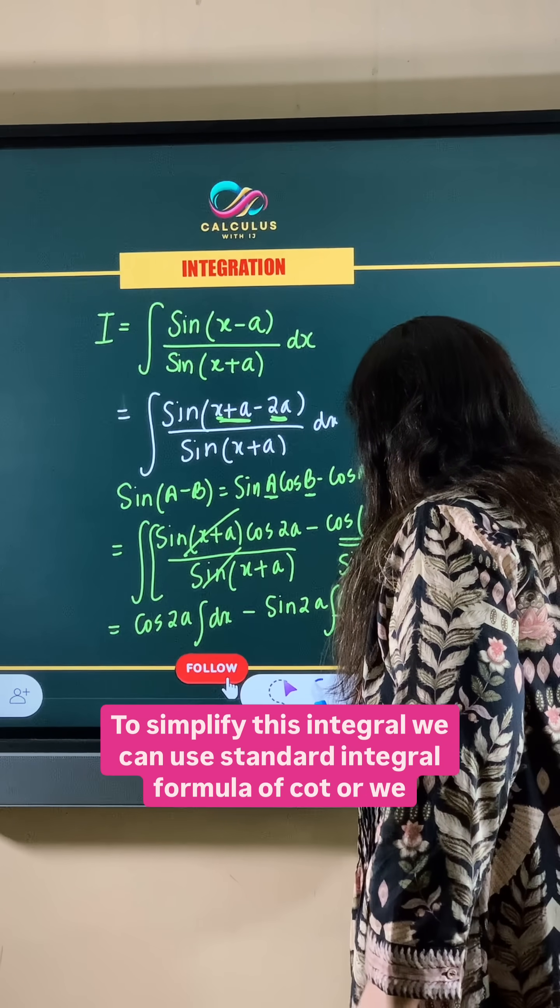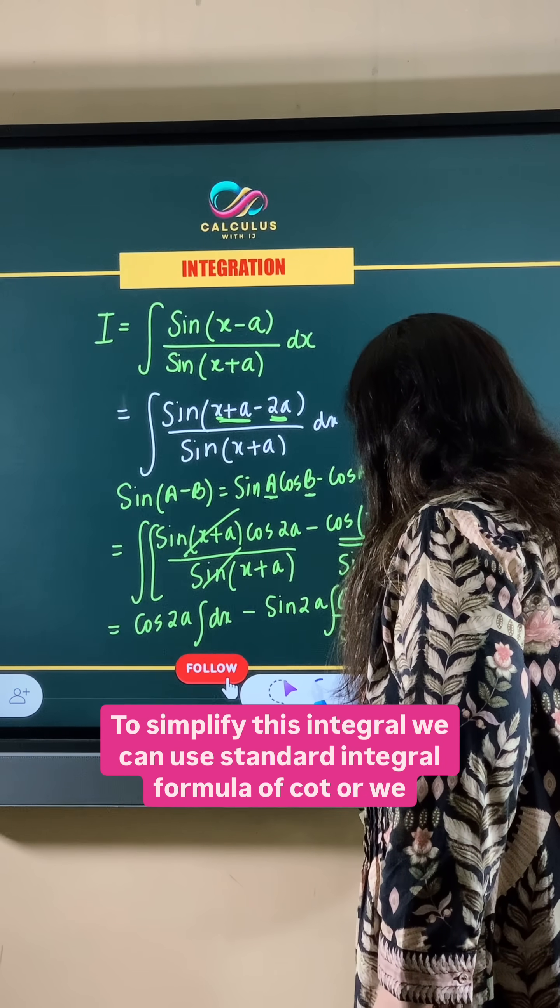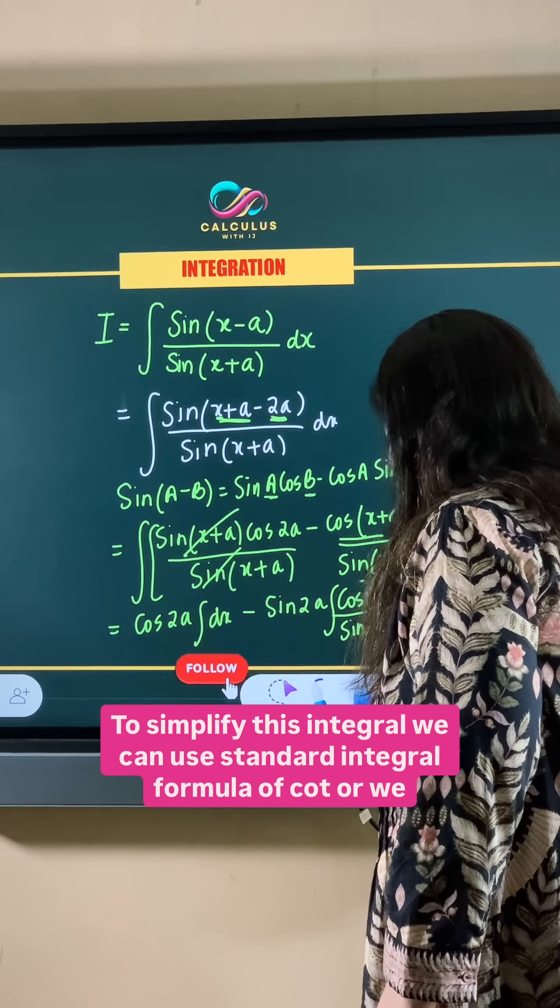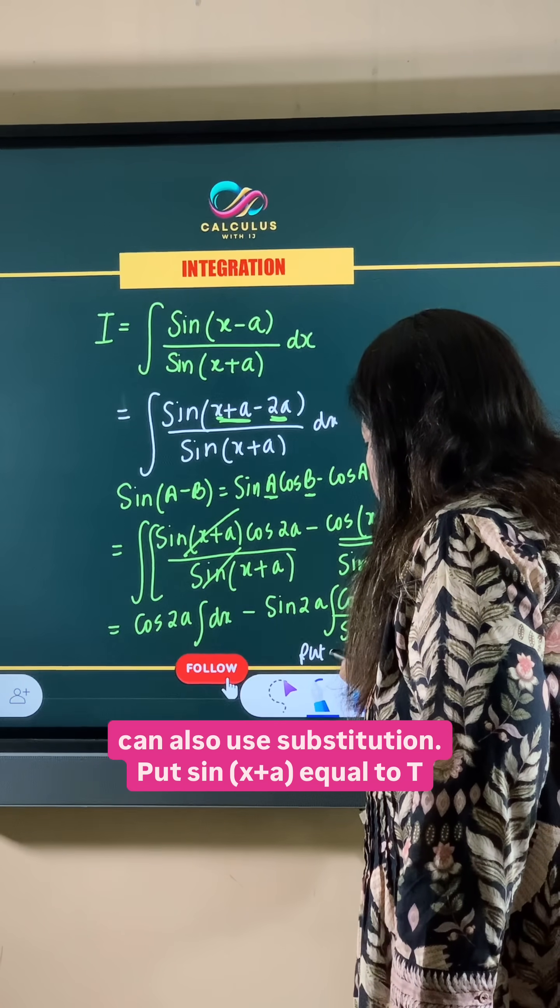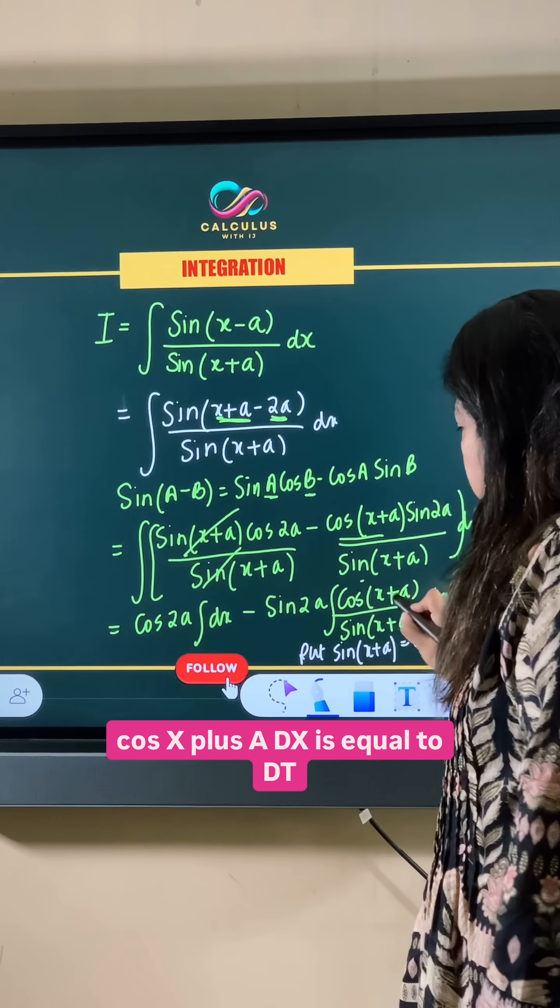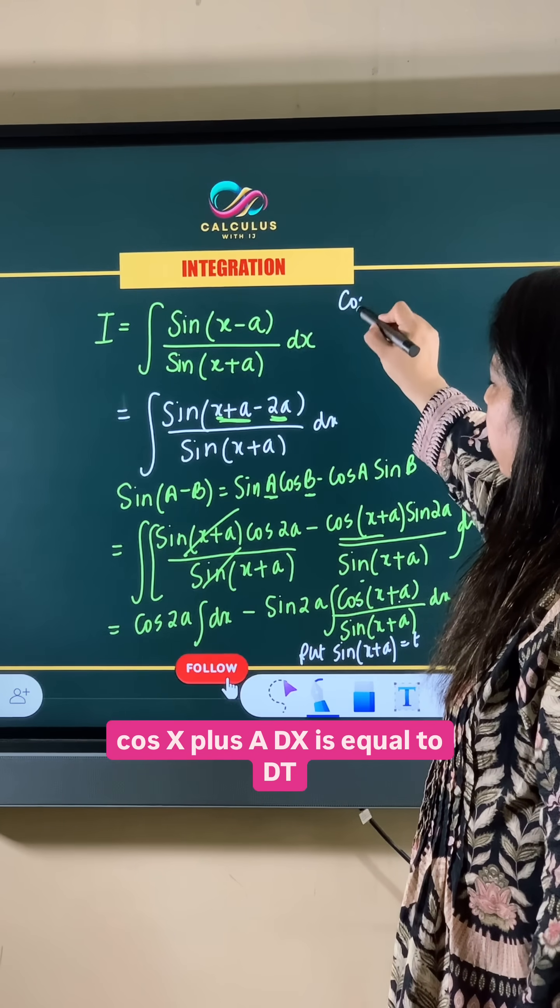To simplify this integral we can use the standard integral formula of cot, or we can also use substitution. Put sine x plus a equals t, so that gives us cos x plus a dx equals dt.